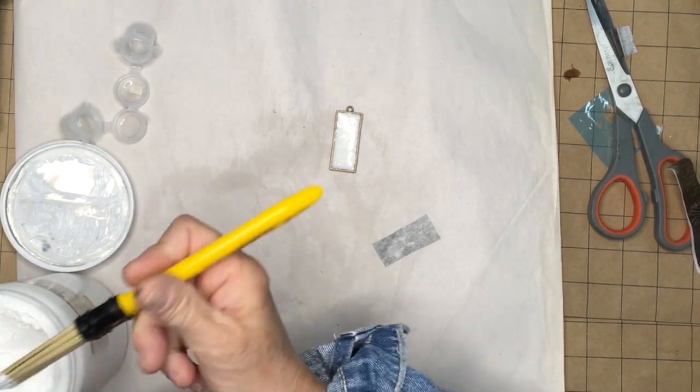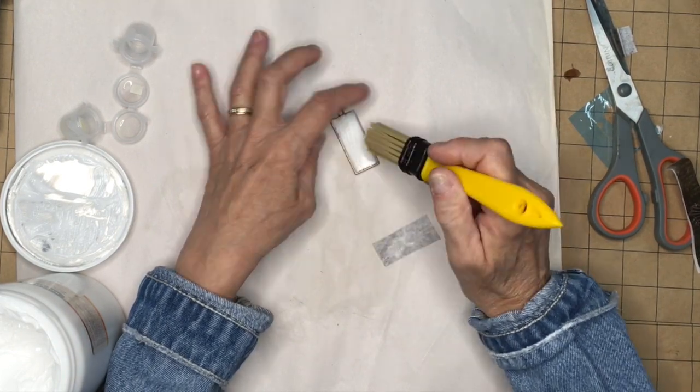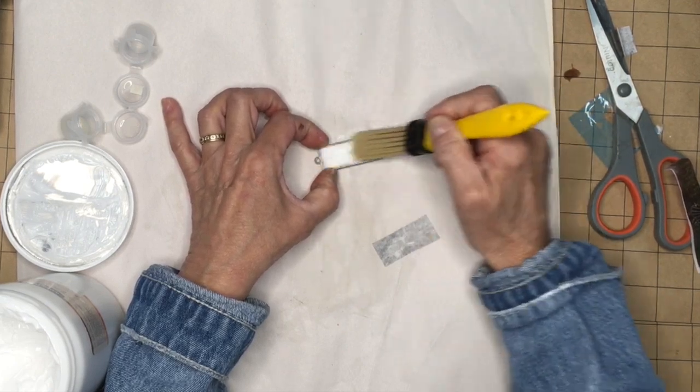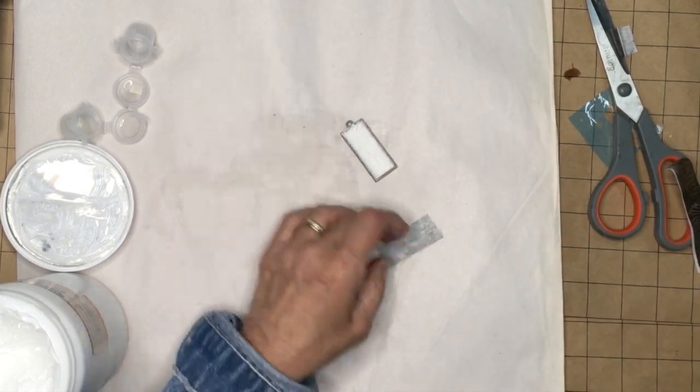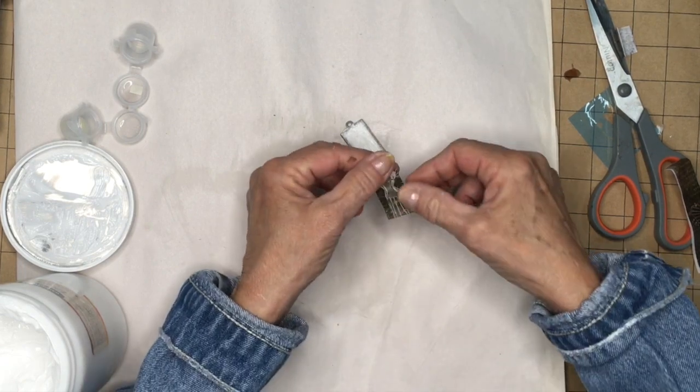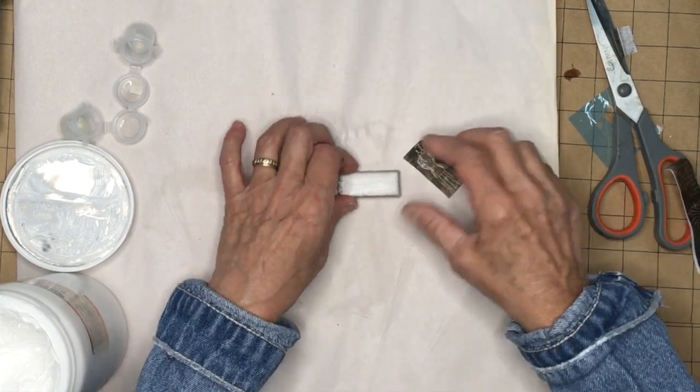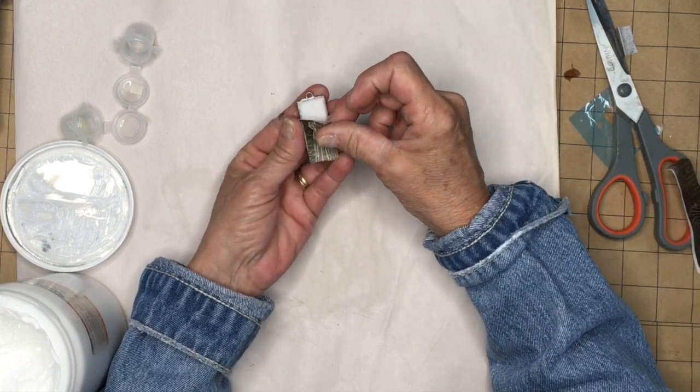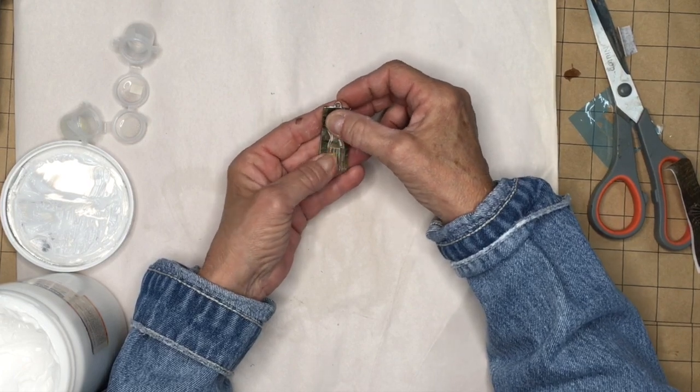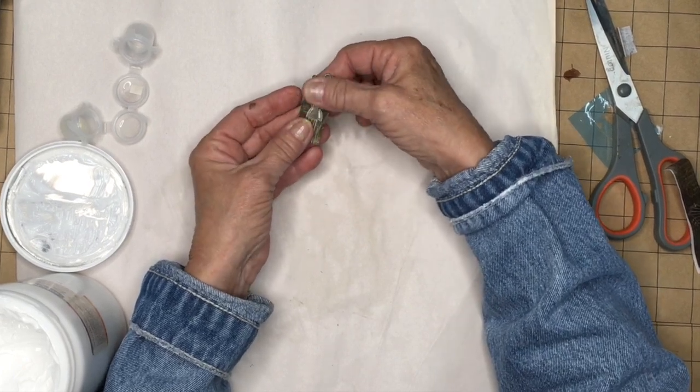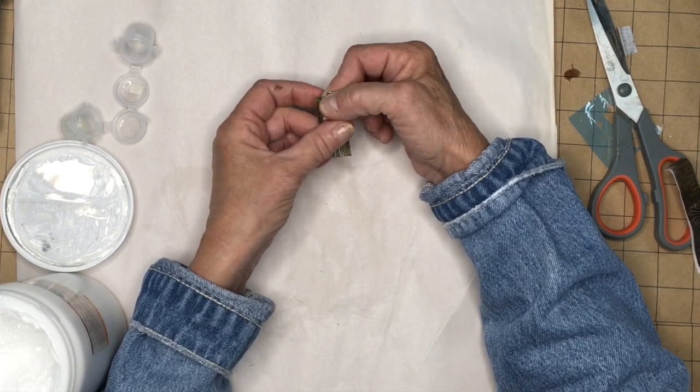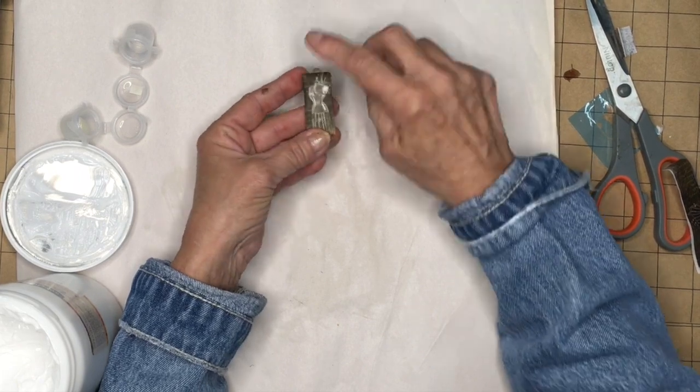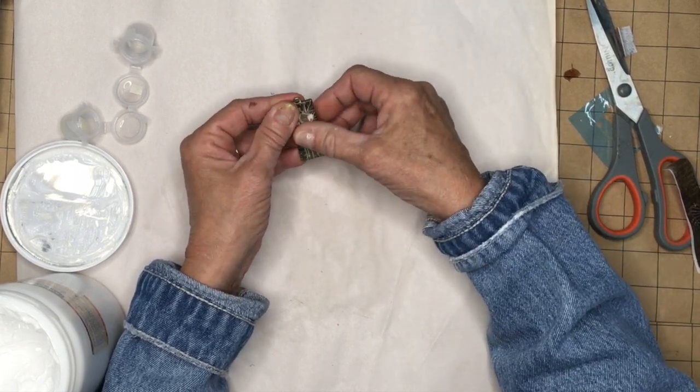We're not gonna need much but we're just gonna put this on here. And I'm not worried about getting it on the frame. I can clean that off later. So it is a little bit larger but that's okay because when it dries we're just gonna use an emery board and just a little sanding stick and go around the edges to get the excess paper off.